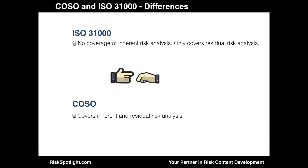Another major difference is that within ISO 31000, only the concept of residual risk analysis is covered — there is no coverage of inherent risk analysis within ISO 31000. COSO covers both inherent and residual risk analysis.